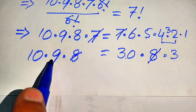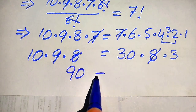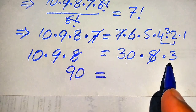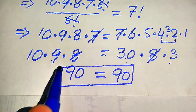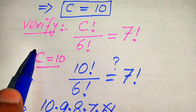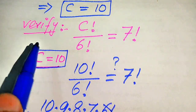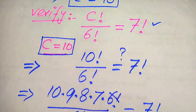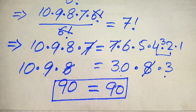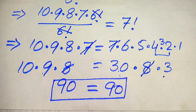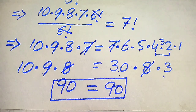On the left, 10 × 9 = 90, and on the right, 30 × 3 = 90. Both sides are equal, confirming that c = 10 satisfies the original equation. This is our final answer. I hope you like this method — please don't hesitate to write other methods in the comment section. Thank you for watching; please subscribe for more videos.